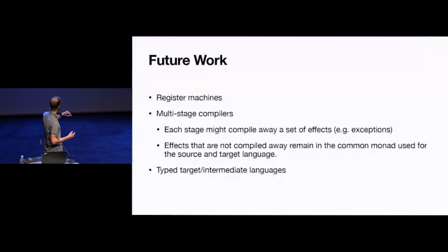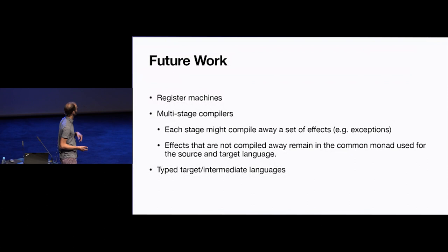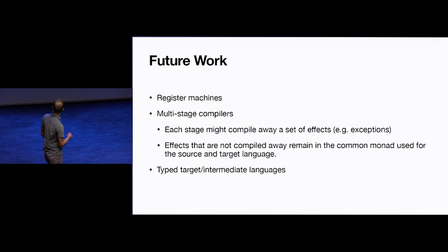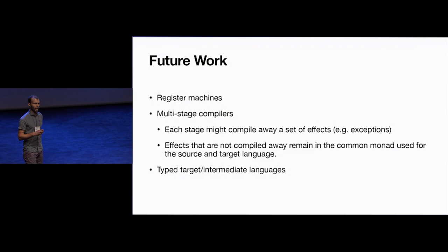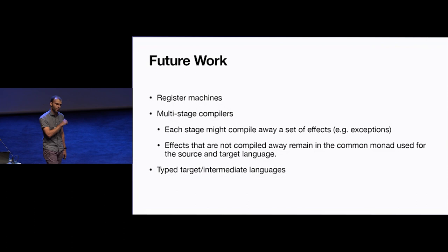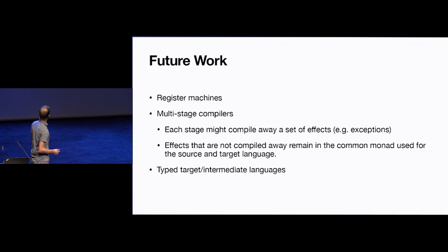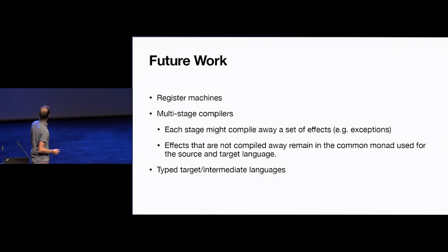A few words about future work. We'd like to extend this from stack machines to register machines, which should be straightforward. A more challenging direction: using monads allows us to consider more interesting monads to structure effects. For example, replacing the partiality monad with the interaction tree monad — which has additional algebraic effects — could allow you to peel off effects step by step during calculation, yielding essentially a multi-stage compiler. This is something we're looking into at the moment.